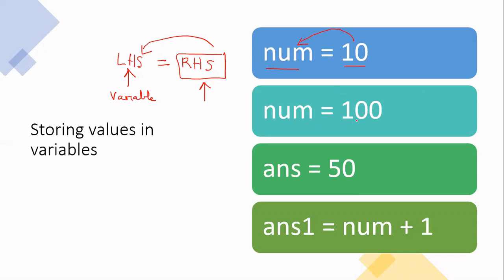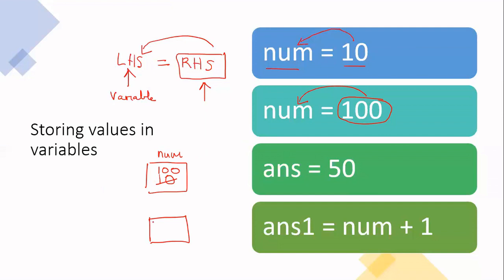In the second example, we are saying num equals 100. So again, the value on the right-hand side goes into the variable on the left-hand side. We first put the value 10 into the variable num, and then in the second example we put the value 100 into the same placeholder — so the value 10 is lost, and the value 100 is now stored in num. In the third example, we are creating a different placeholder called ants, and we're taking the value 50 and putting it into the variable ants. The fourth example is ants1, which is similar to ants but seen as a different placeholder.